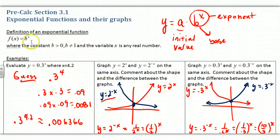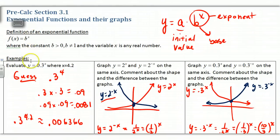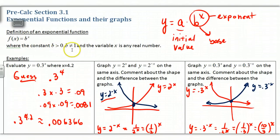A definition: an exponential function is f(x) = b^x, where the base is b and the exponent is x. If it's an exponential function, the variable is in the exponent. x^3 is not an exponential function because there's no variable in the exponent. b has to be greater than 0 — if it's less than 0 we get confused because the exponent could be even, odd, square root, lots of different things.